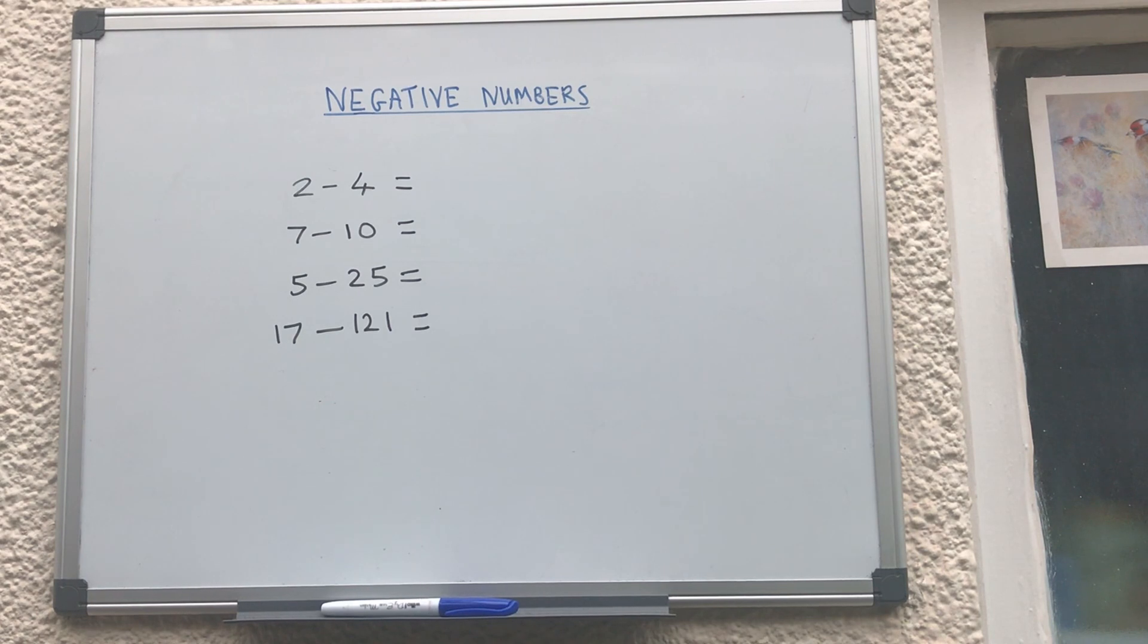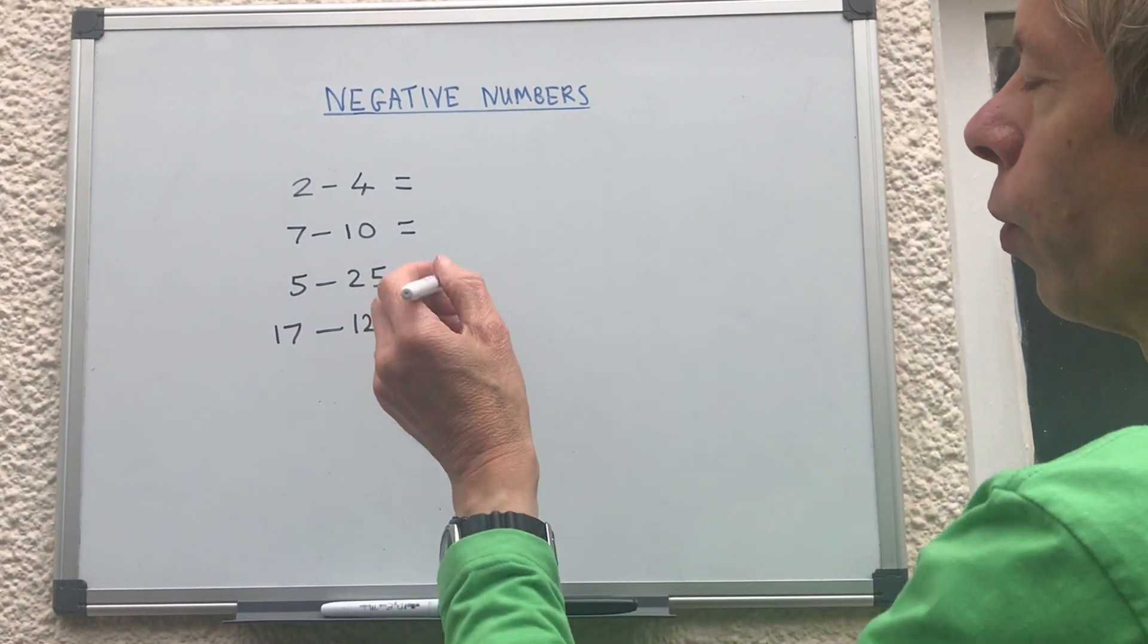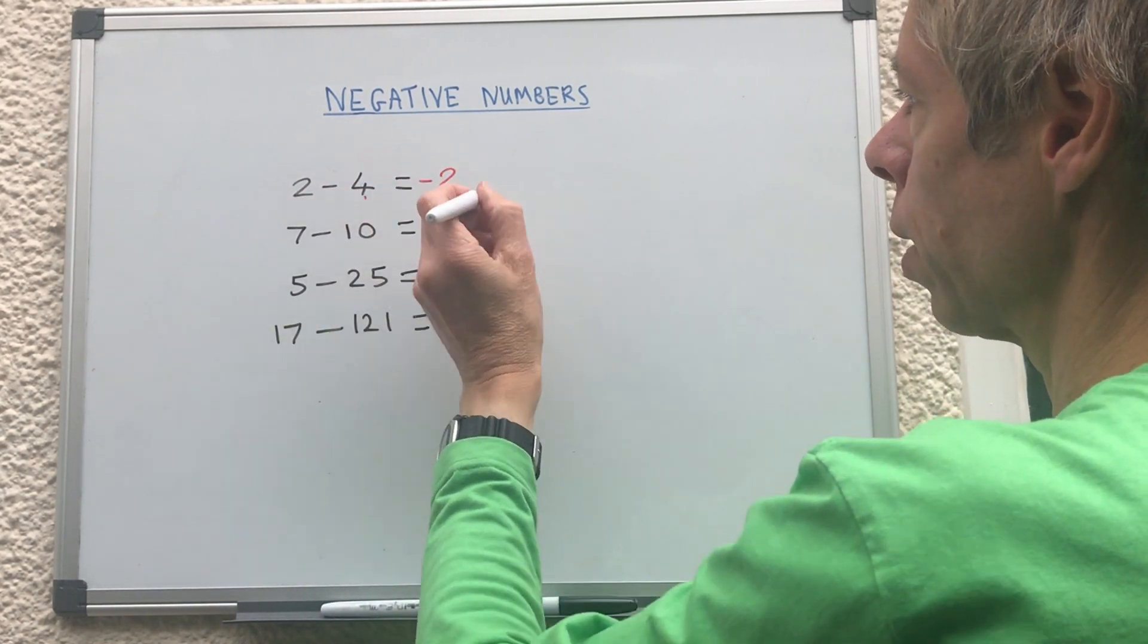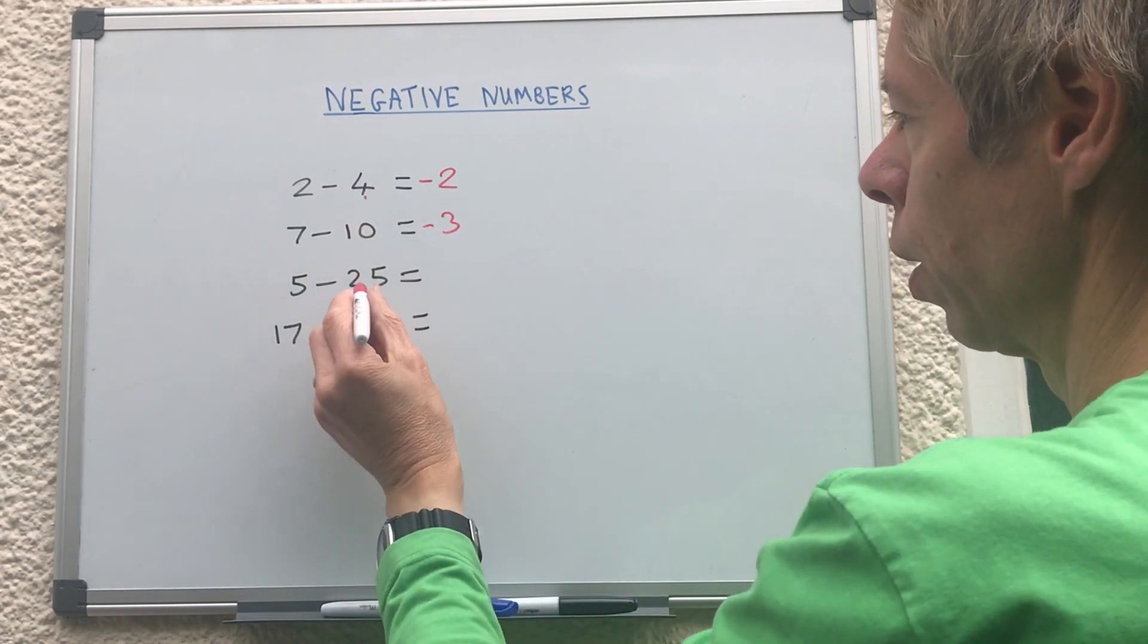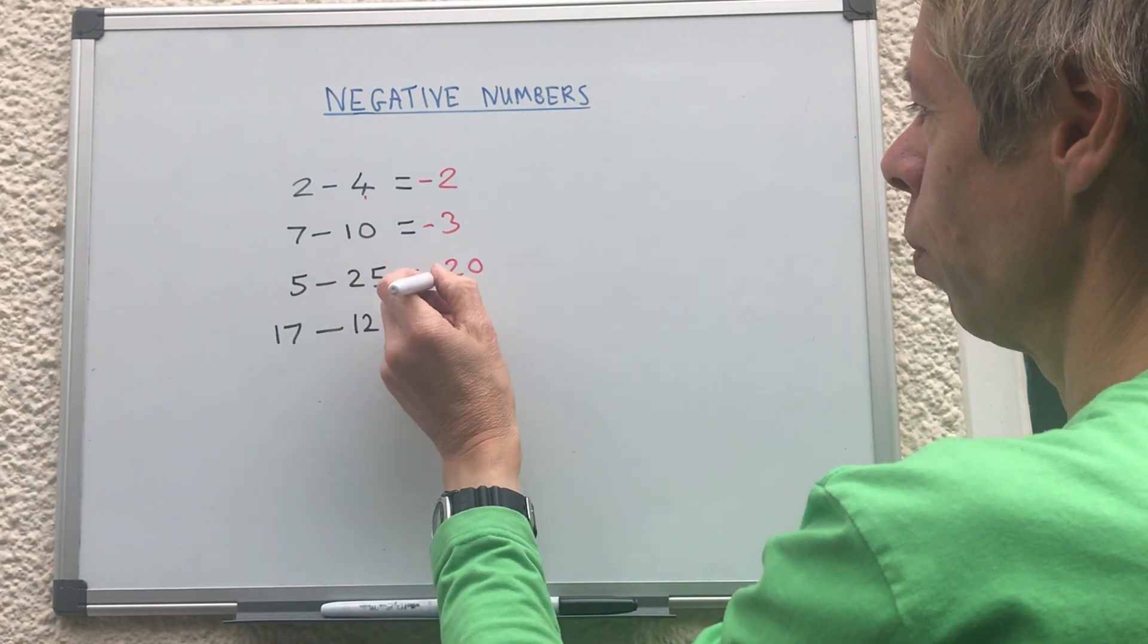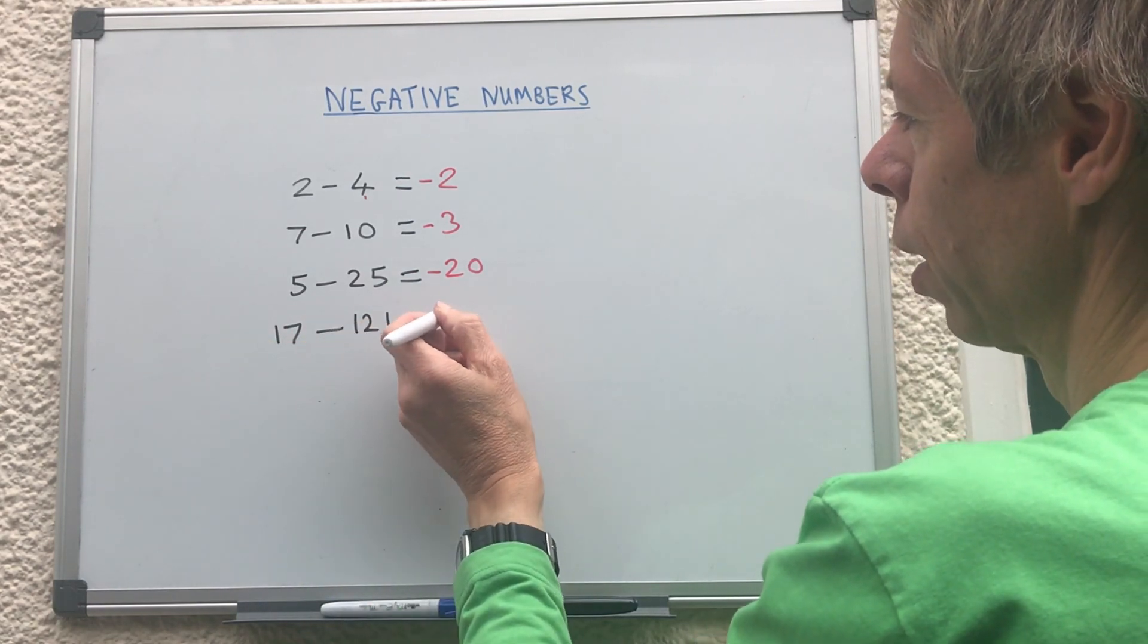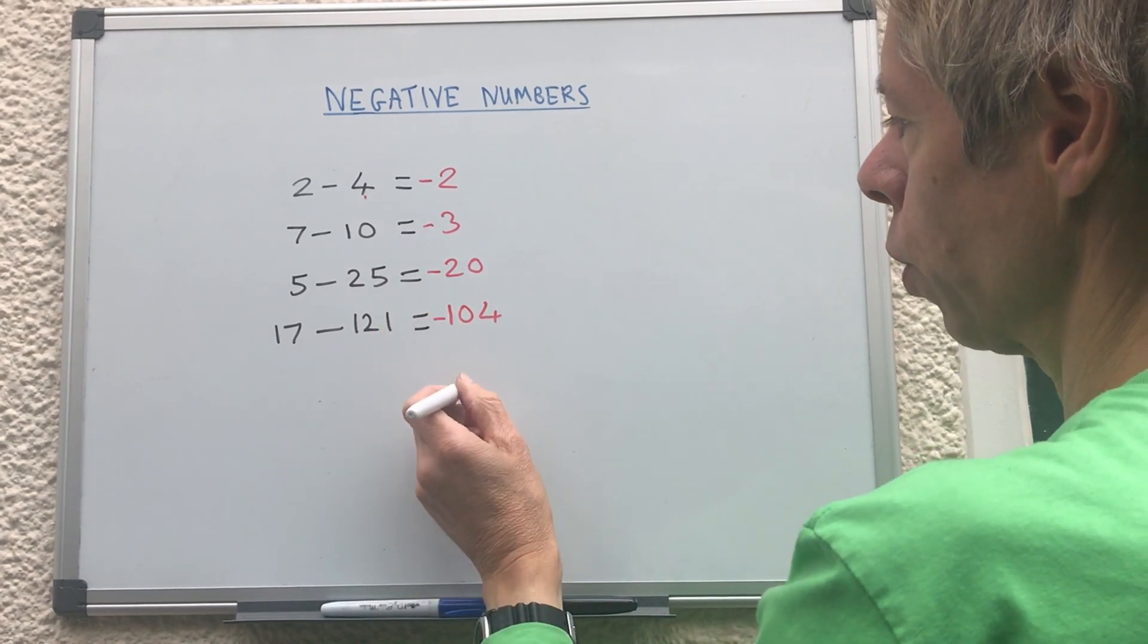Let's go through them. So as I said all you got to do is four take away two is two and then put a minus sign in front. Ten take away seven is three, put a minus sign in front. 25 take away five is five, no it's not, 25 take away five is 20, put a minus sign in front.